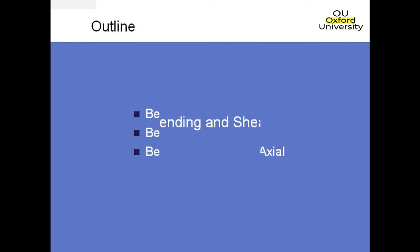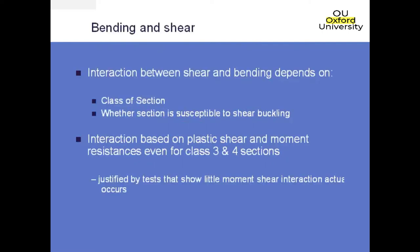Starting off with bending and shear. The shear forces acting on a steel section can reduce the bending resistance of the section if the shear force is large enough, and therefore it's necessary to consider the interaction between these two actions. The interaction will depend on two different things: first of all, the class of the section, and second of all, whether the section is susceptible or not to shear buckling.